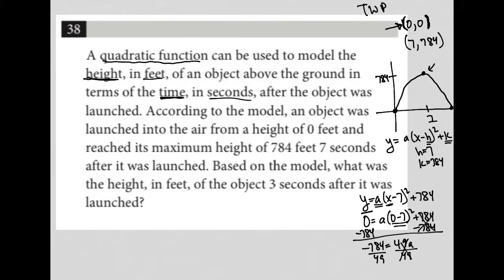So I get, or negative 16, sorry. So I get a equals negative 16. So my model is really y equals negative 16(x minus 7) squared plus 784.